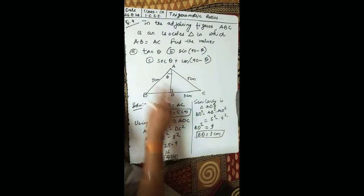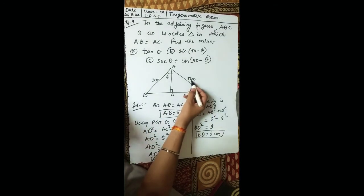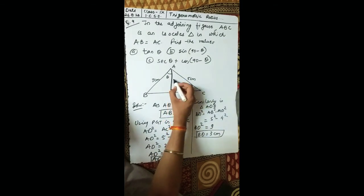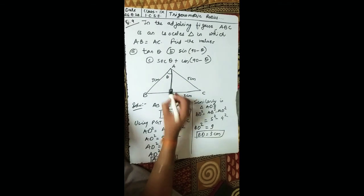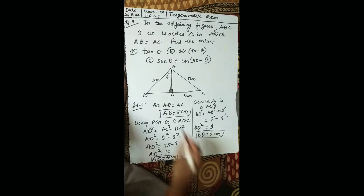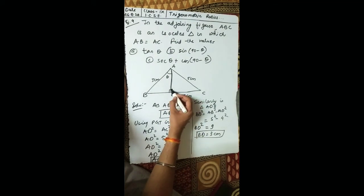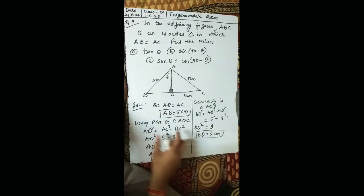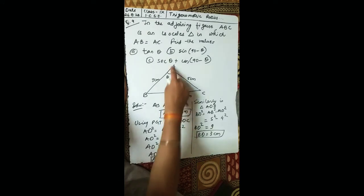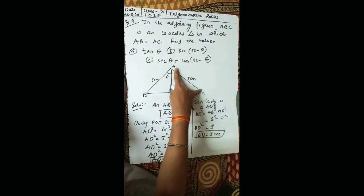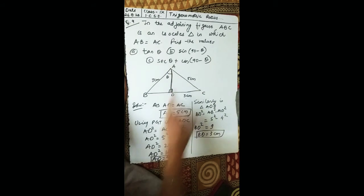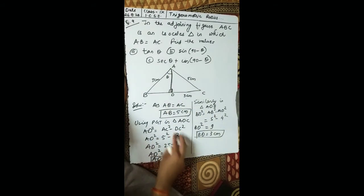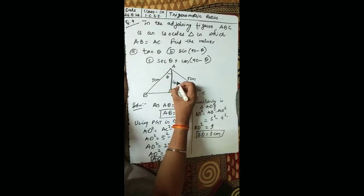We have 5 here and 3 here. The angle at D is 90 degrees. By the linear pair property, since the full angle is 180 degrees, the other part is also 90 degrees. Using PGT in triangle ADC — hypotenuse and base are given, so perpendicular squared equals hypotenuse squared minus base squared — we get AD equals 4 centimeters.